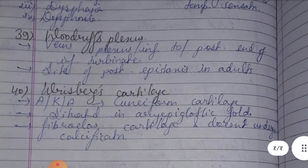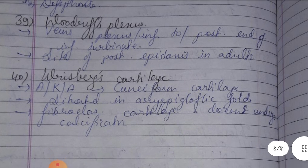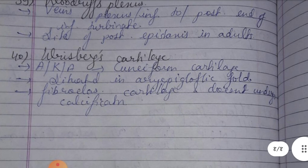Thirty-ninth is Woodruff's plexus — a venous plexus which is inferior, at the posterior end of the inferior turbinate. This is the posterior epistaxis site in adults.